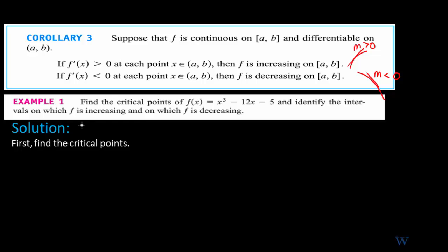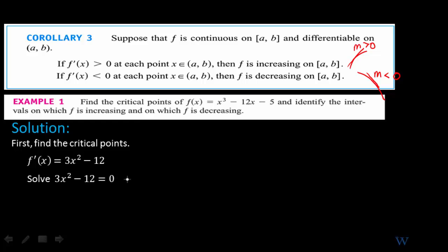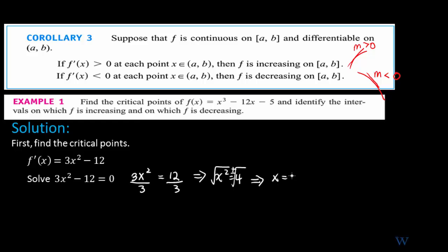Let's look at an example. We're asked to find the critical points of the function f(x) = x³ − 12x − 5, and identify the intervals on which f is increasing and decreasing. The first step is to find the critical points — where the derivative is zero or undefined. Taking the first derivative: f′(x) = 3x² − 12. Setting it equal to zero: 3x² = 12, so x² = 4, giving x = ±2. These are our critical numbers.